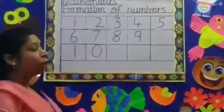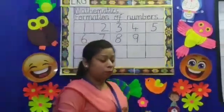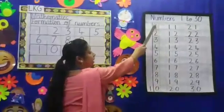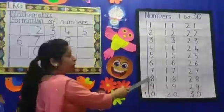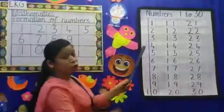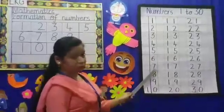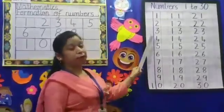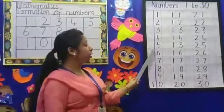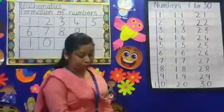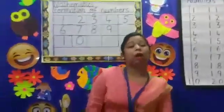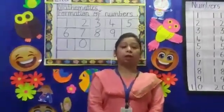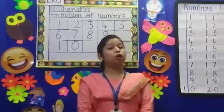Children, when you write your numbers from 1 to 30, you will follow the same pattern — the formation that is shown in the chart. Can you see, children? You have to follow the same formation of numbers. The worksheets are uploaded on the website; please check, follow them, and do your work.